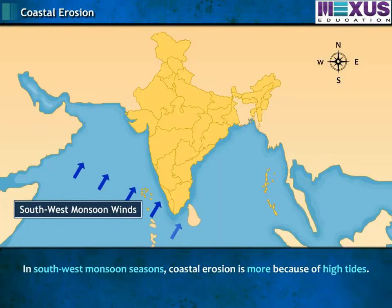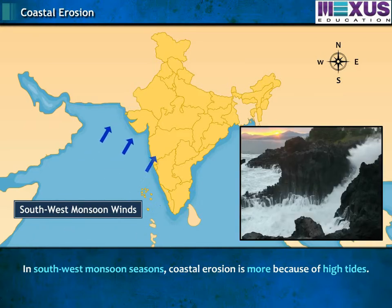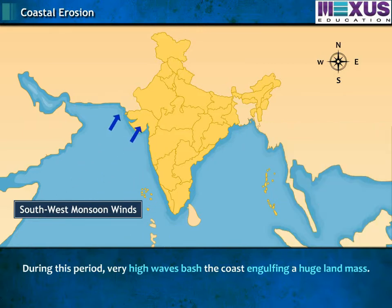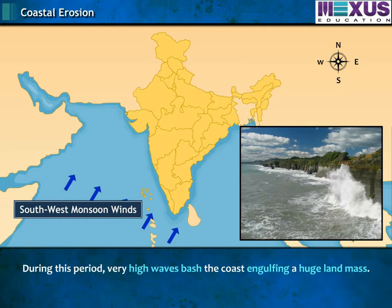In southwest monsoon seasons, coastal erosion is more because of high tides. During this period, very high waves bash the coast, engulfing a huge land mass.